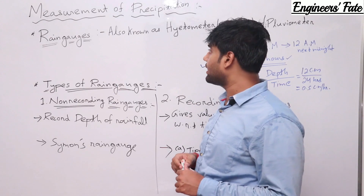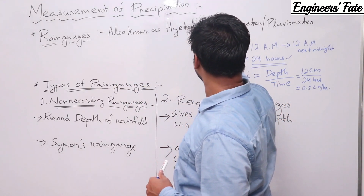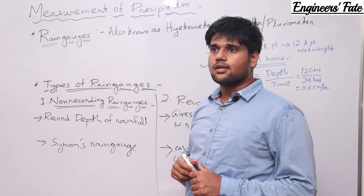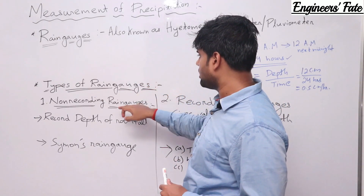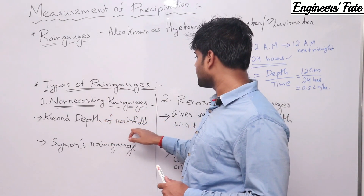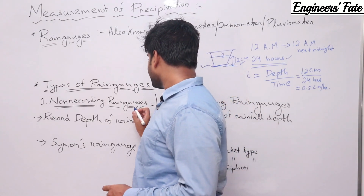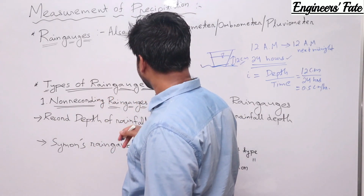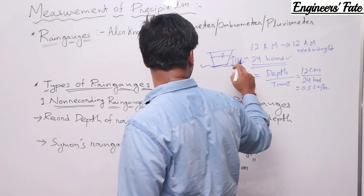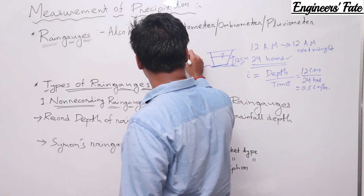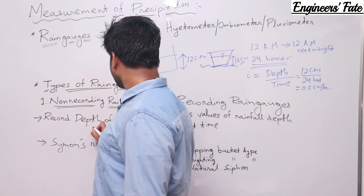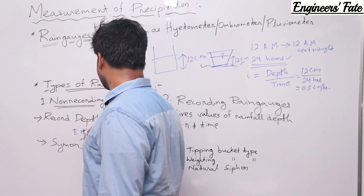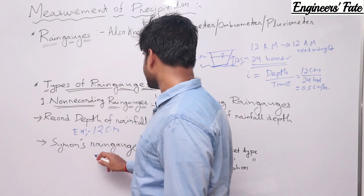A rain gauge is also known as a hyetometer, ombrometer, or fluviometer and it measures rainfall. One type is the non-recording rain gauge, which only records the depth of rainfall — it will not mention the intensity of rainfall. It simply records the depth, for example 12 cm. An example of a non-recording rain gauge is Symon's rain gauge.